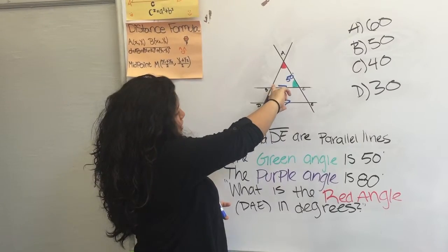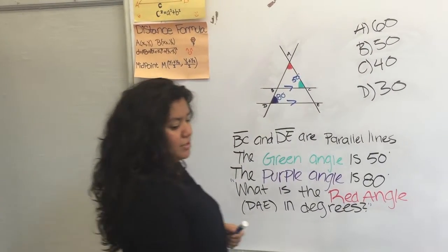So then this angle and this angle are congruent because they are alternate interior angles. So we're going to go ahead and mark that down.